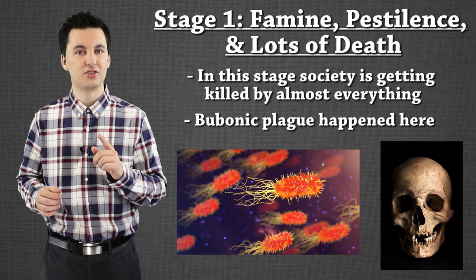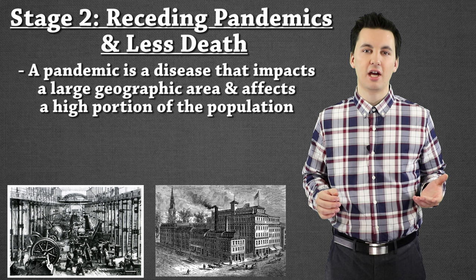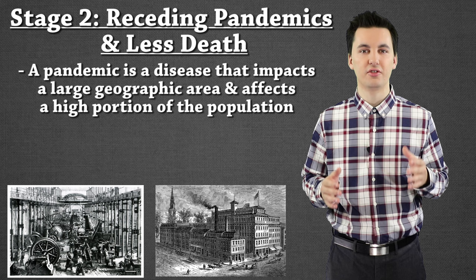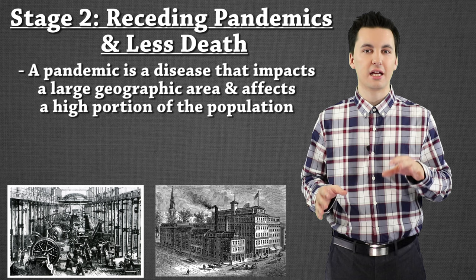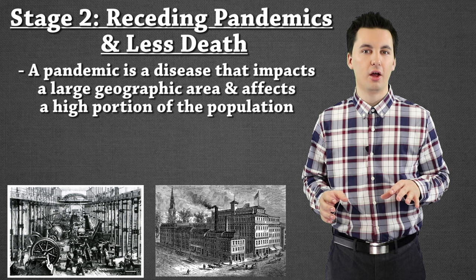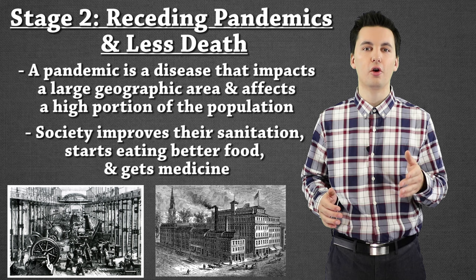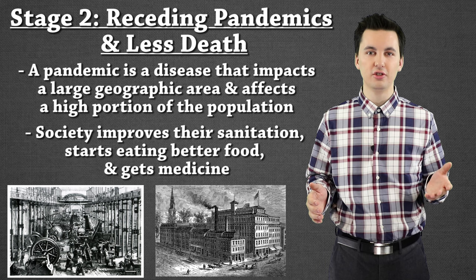Stage two is a little bit better to be in. We're actually going to see less deaths here, and we're also going to see a receding pandemic — meaning we'll be seeing fewer diseases impacting a large geographic area and killing as many people. One of the things that happens here as well is we see an increase in sanitation. People start to wash their hands, they're eating better food, and we see urbanization start to happen. The first time societies moved into this stage was actually during the Industrial Revolution.